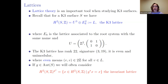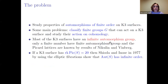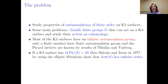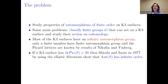The invariant lattice is quite important because it can give information, for example about the Picard number of a K3 surface that has an automorphism. Studying automorphisms of varieties is always very useful — you get information about geometry, moduli spaces, and so on. The main problem is to classify finite groups g that can act on K3, and study for example their action in cohomology, in view of studying moduli spaces.